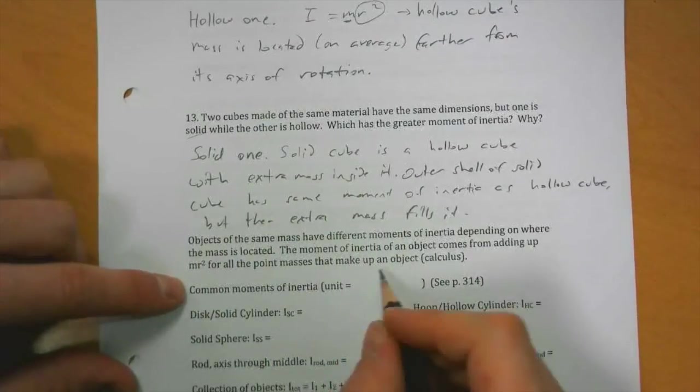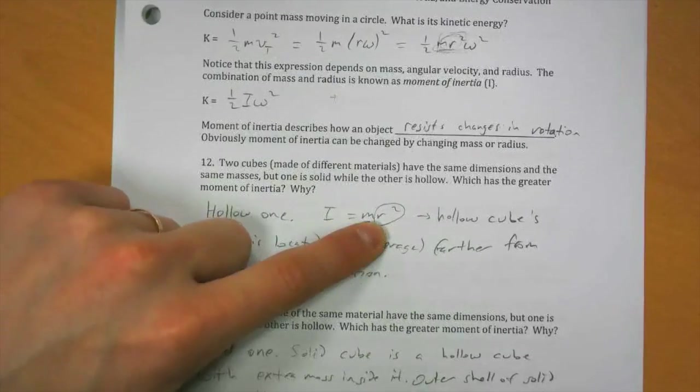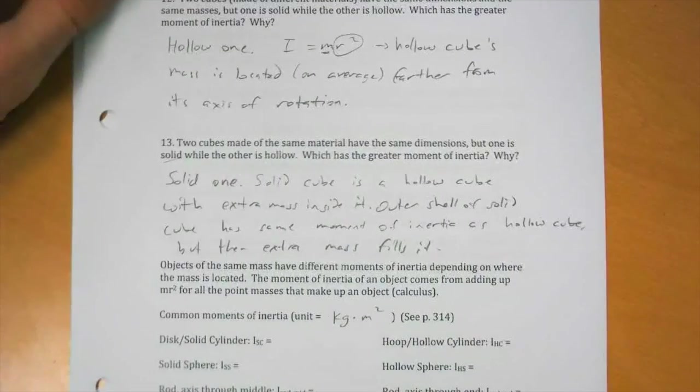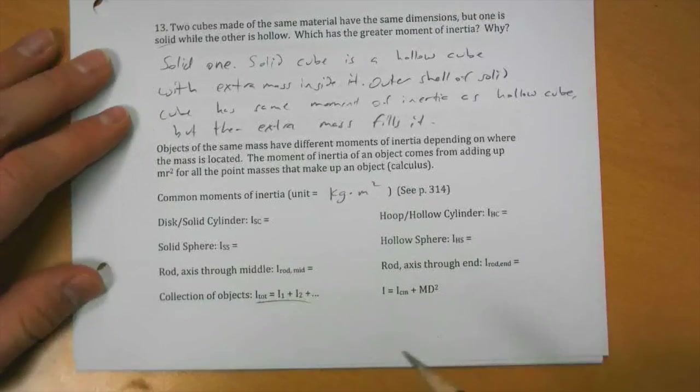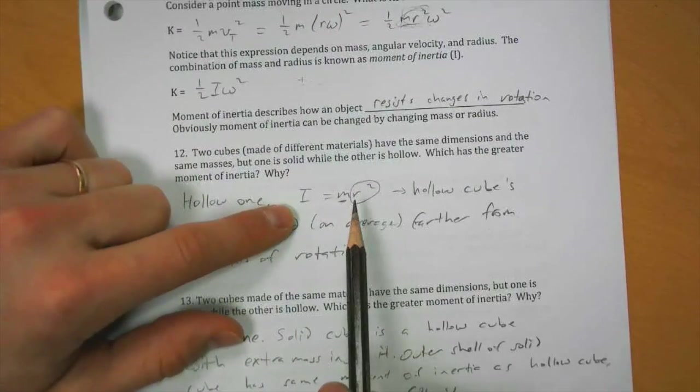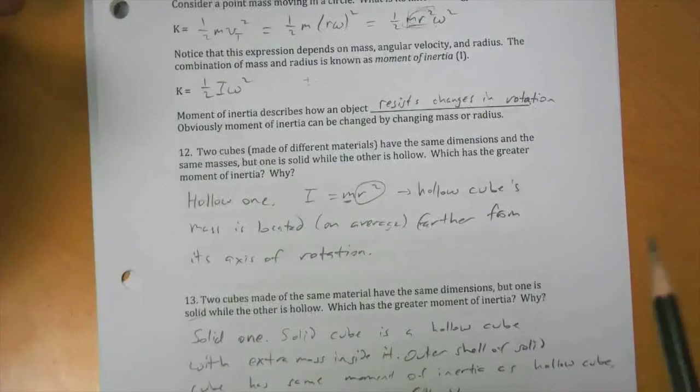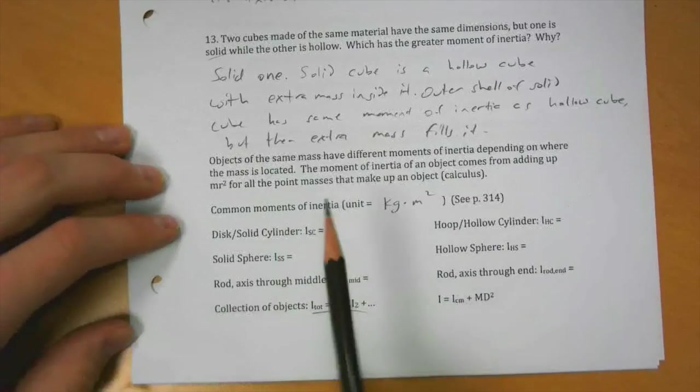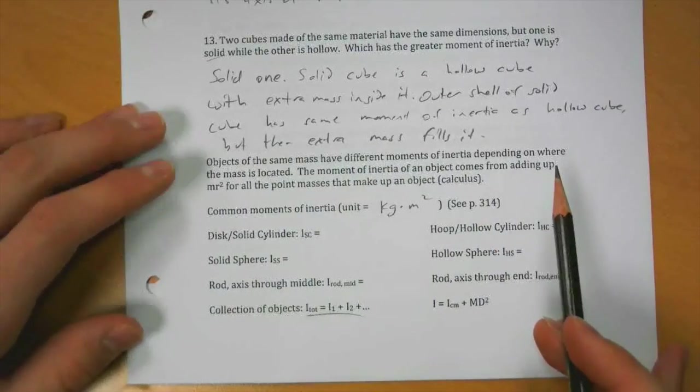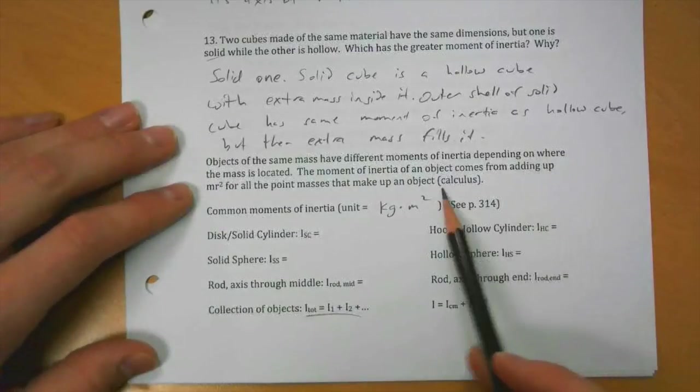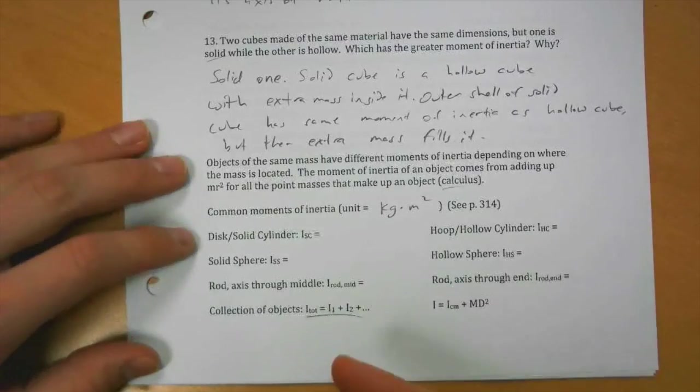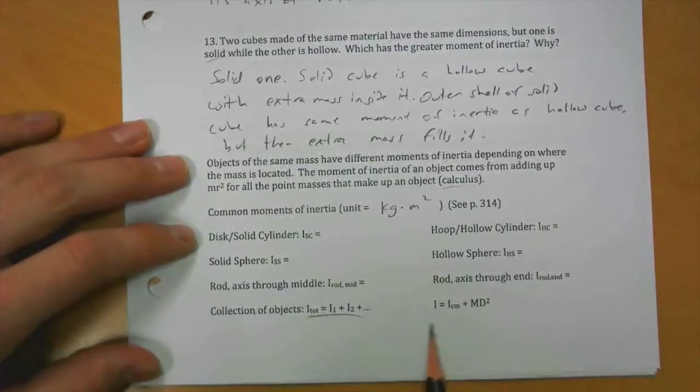The unit of moment of inertia, it's a mass times a distance squared, is kilogram meter squared. Page 314 in your book has moments of inertia of some common objects. So moment of inertia is MR squared for a point mass. For other objects, you get their total moment of inertia by adding up all the point masses, which is a calculus thing.